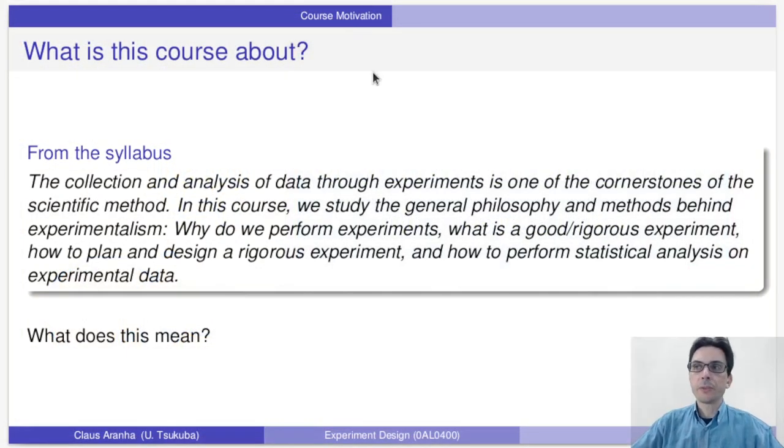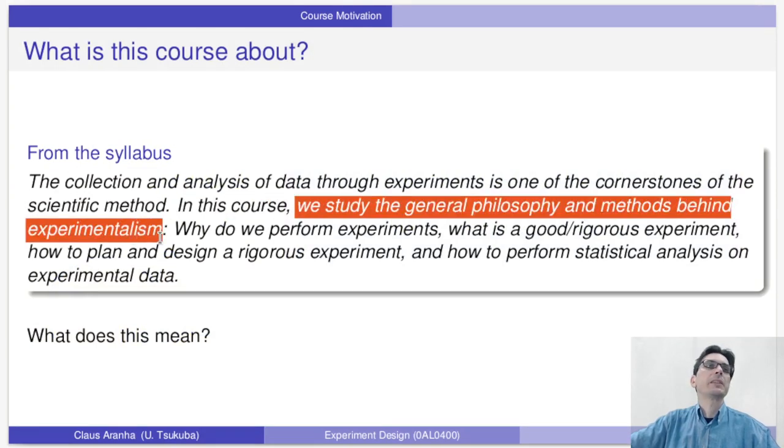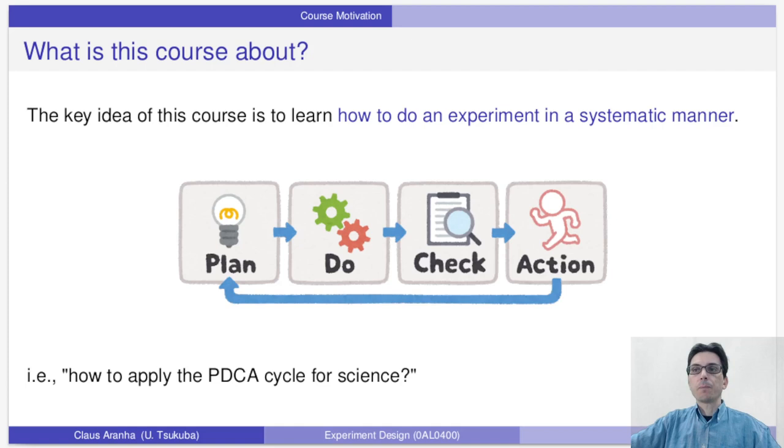The main objective of this course is describing the syllabus. We are going to study the general philosophy and methods behind experimentalism. But what exactly does this mean? If I were to explain this course in one sentence, I would say that we are going to learn how to do an experiment in a systematic manner. One way to look at it is to think about the PDCA paradigm of industry. Plan, do, check, and act.